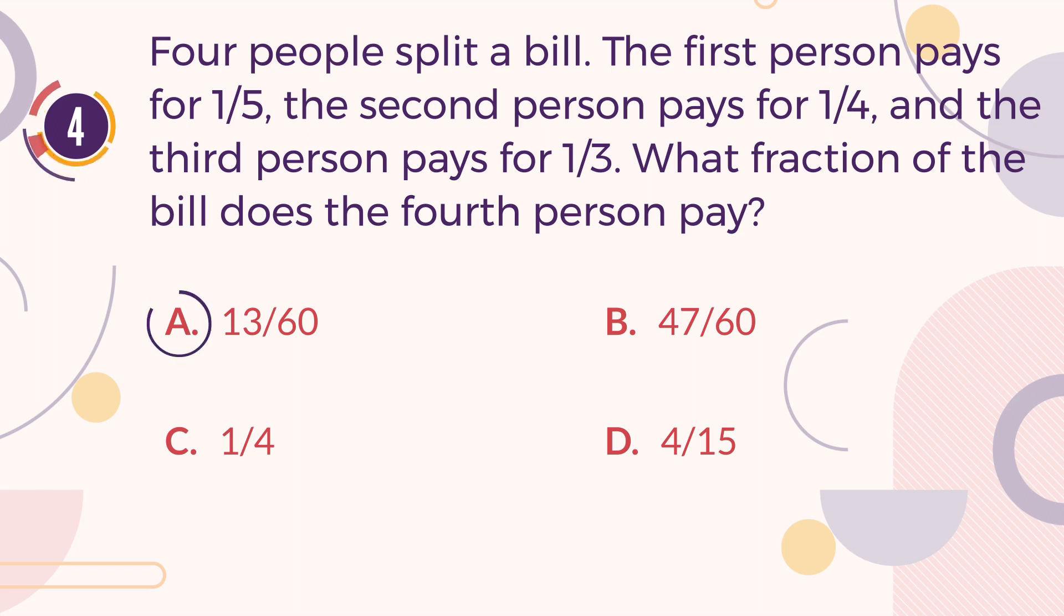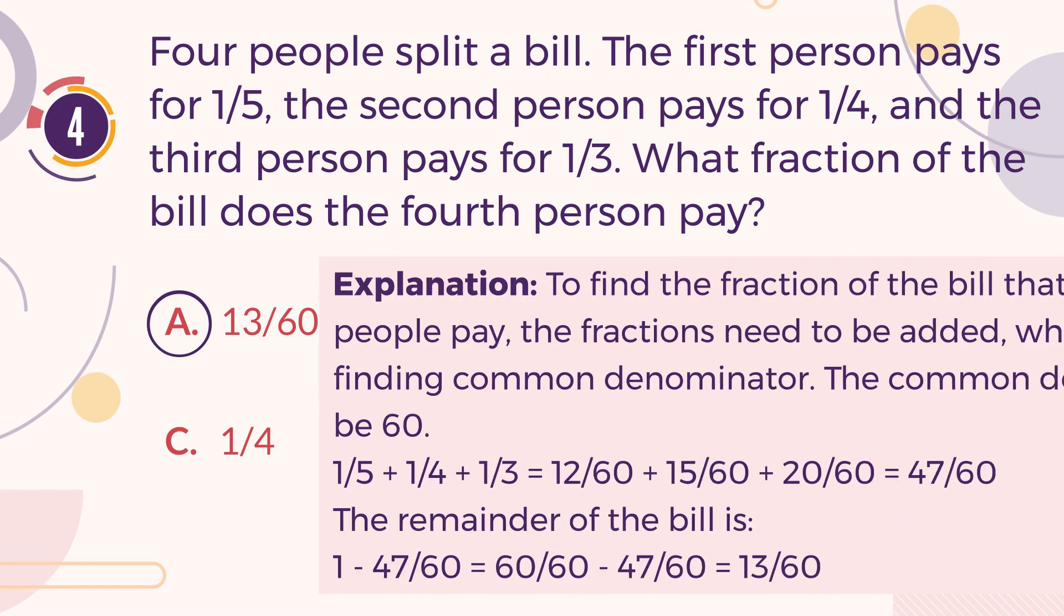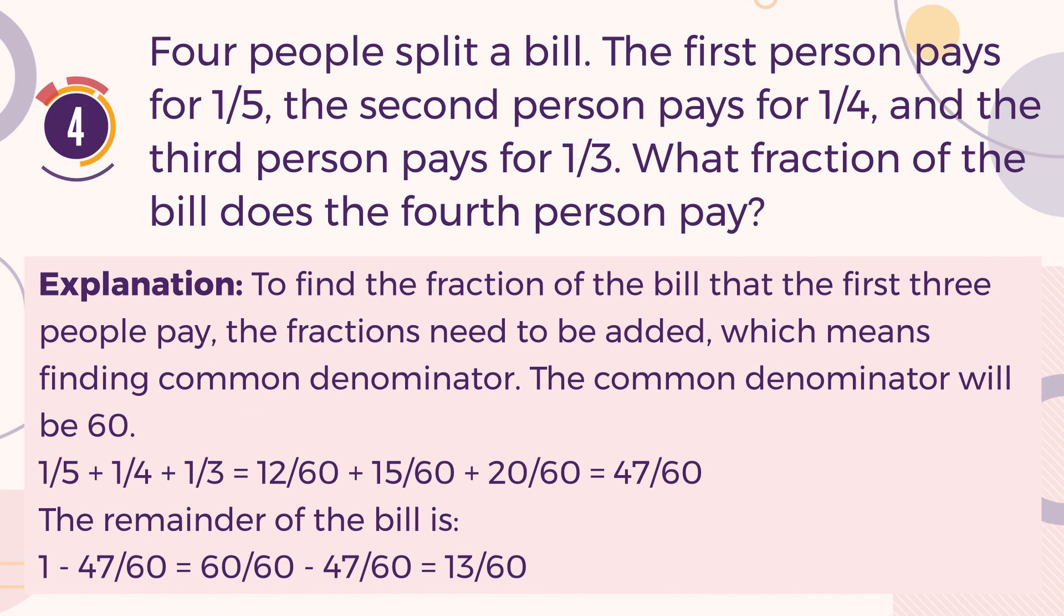The correct answer is A. 13/60. Explanation. To find the fraction of the bill that the first three people pay, the fractions need to be added, which means finding a common denominator. The common denominator will be 60. One-fifth plus a quarter plus one-third equals 12/60 plus 15/60 plus 20/60, which equals 47/60. The remainder of the bill is 1 minus 47/60, which equals 60/60 minus 47/60, resulting in 13/60.